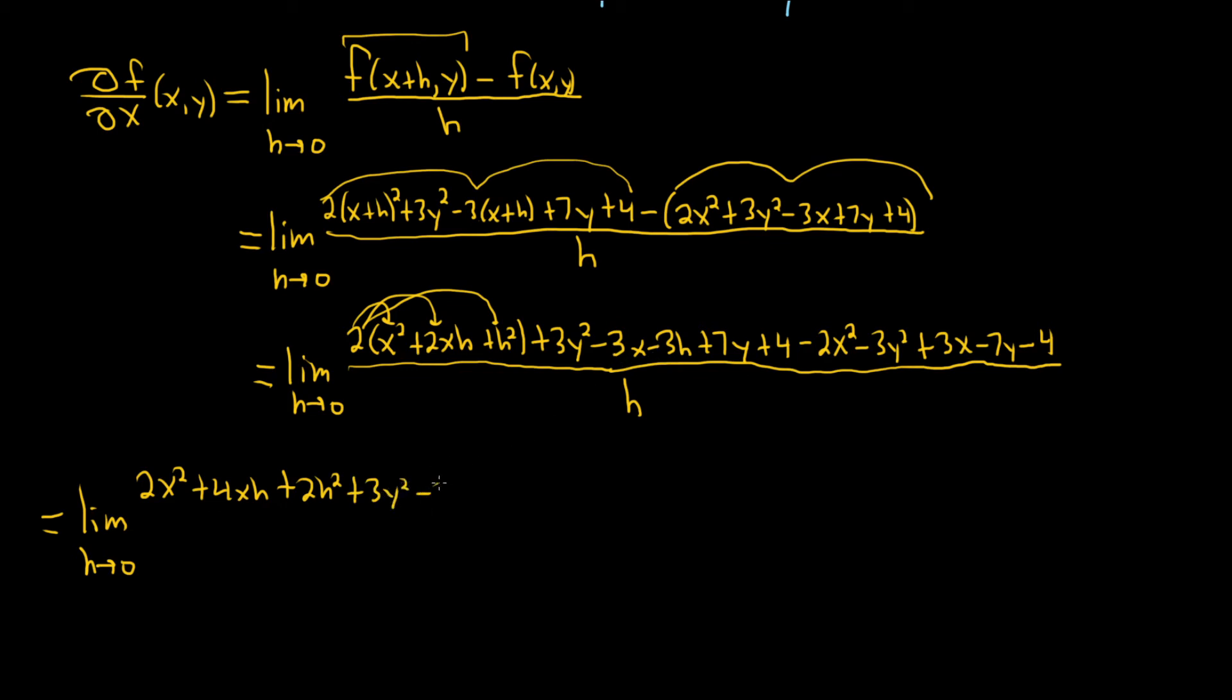Plus 3y squared. Then minus 3x. Does stuff cancel here? Yeah, let's think about that. Let me just. So we distributed this.